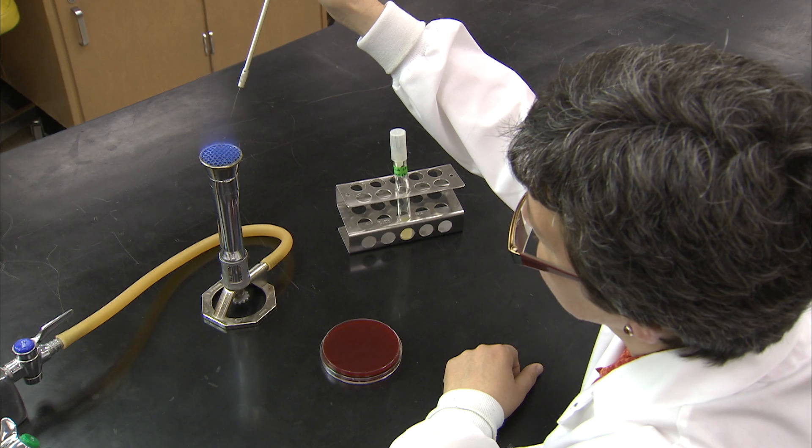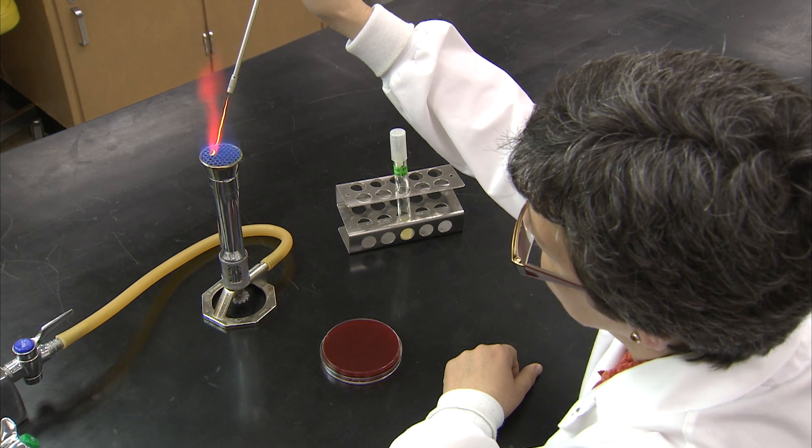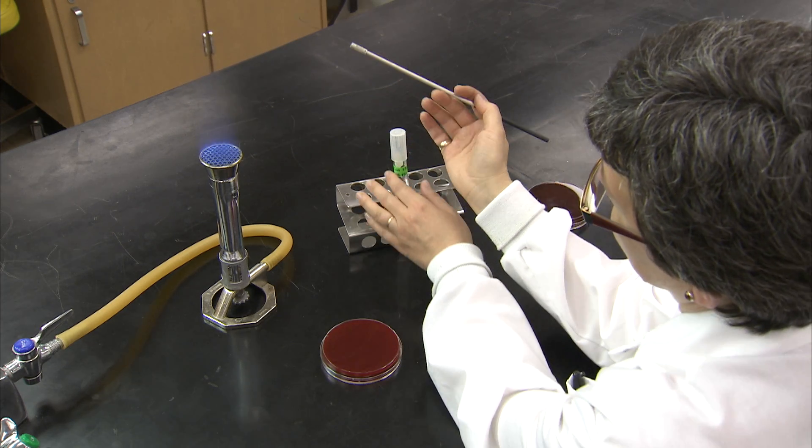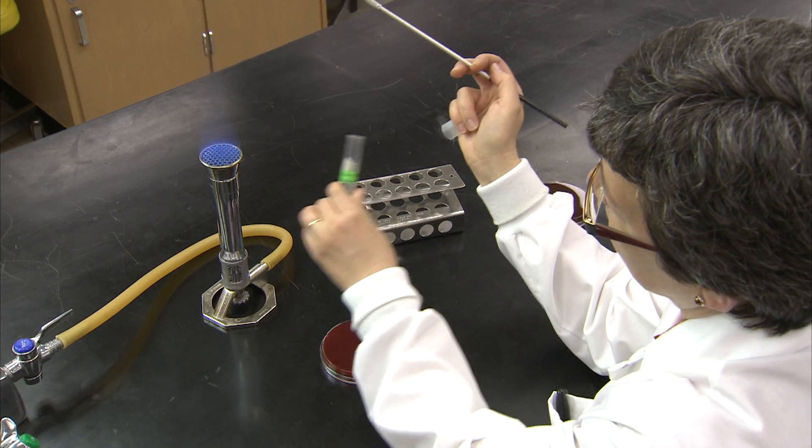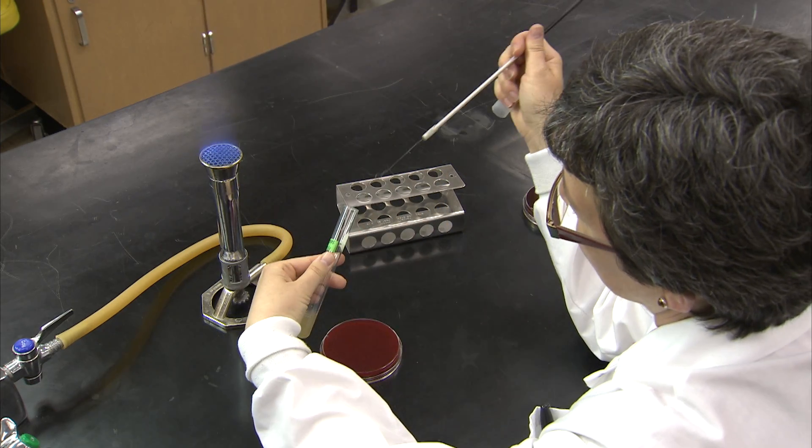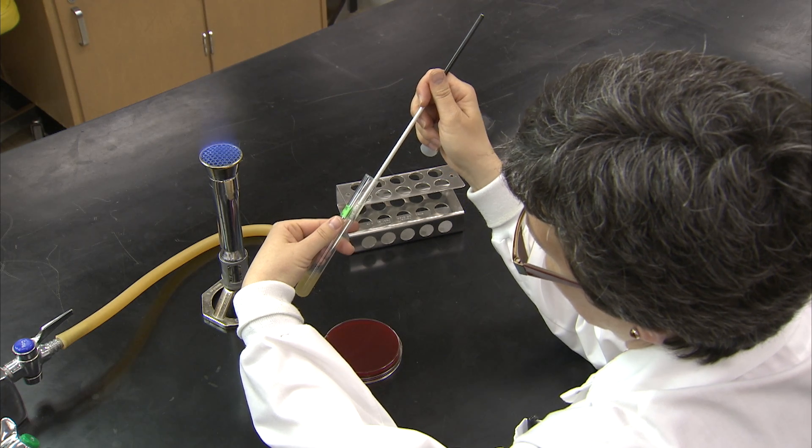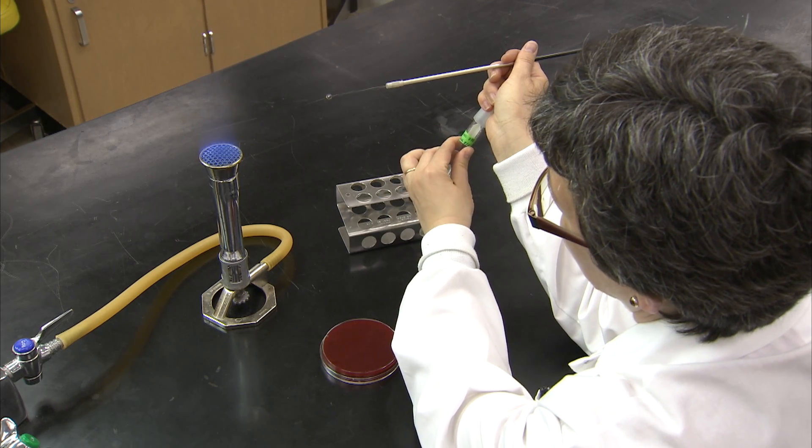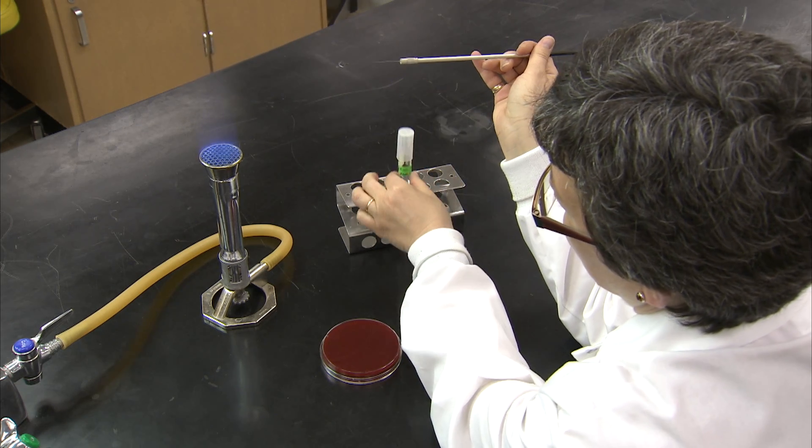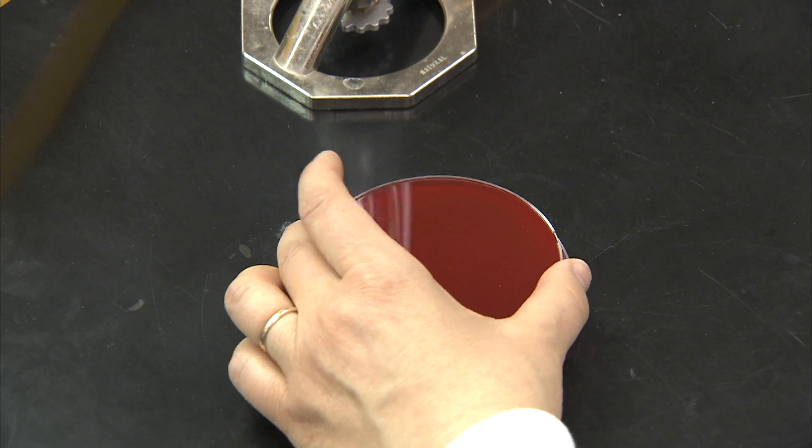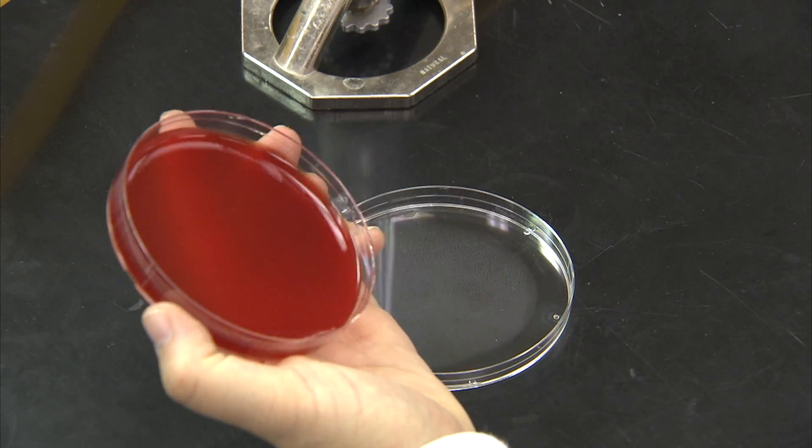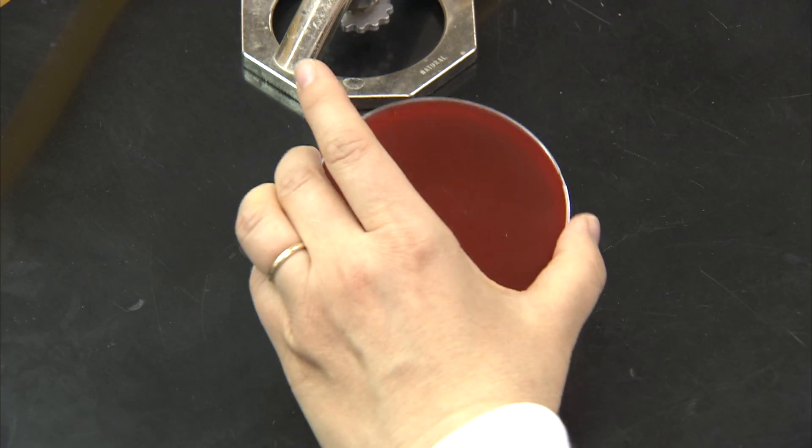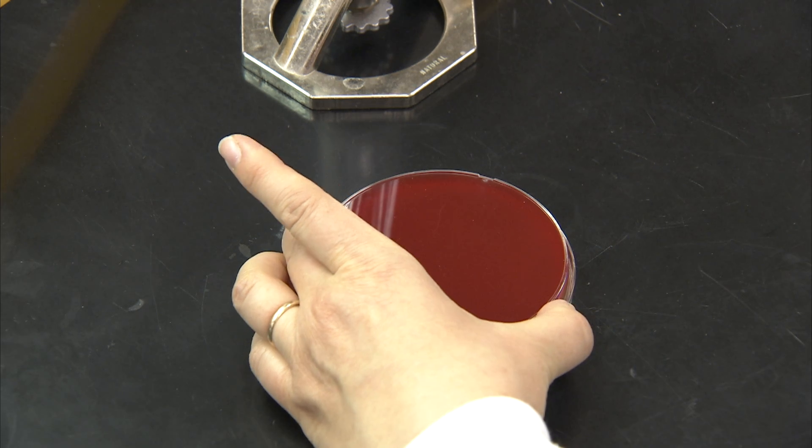To apply a culture to a plate with the goal of obtaining colonies arising from isolated bacterial cells, we start the same way. Once the culture is on the loop, a plate, which is kept closed and inverted until immediately before use, is picked up and a light inoculation is zigzagged over one quadrant of the plate. The plate is placed back down, the loop is sterilized and allowed to cool.